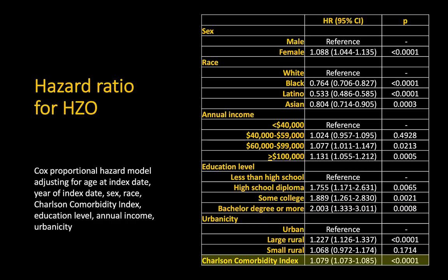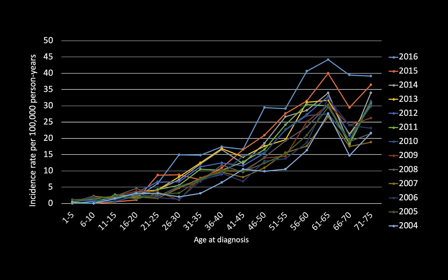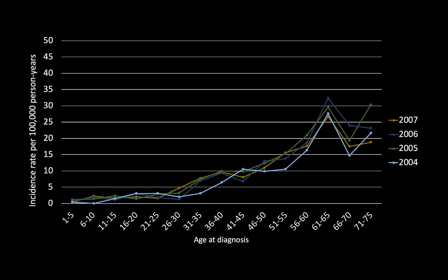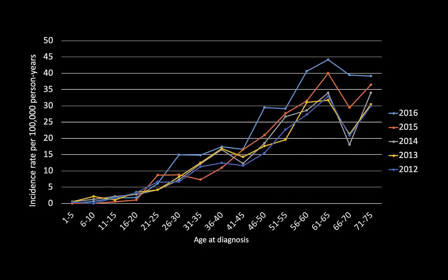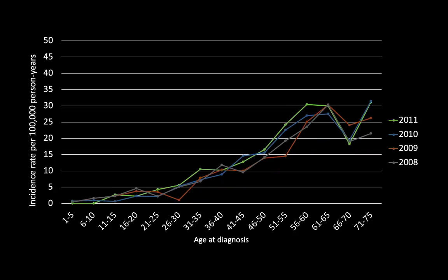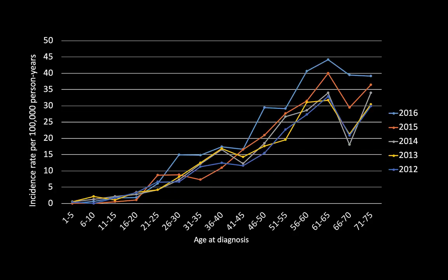Similarly, in a complicated statistical model showing risk factors for herpes zoster ophthalmicus, I first talk about females having an 8.8 percent higher hazard ratio, then that Blacks, Latinos, and Asians have substantially lower risk compared to whites, then that higher income, higher education level, rural location, and higher systemic comorbidity are all associated with higher risk. Visually, your eyes flow downward in the manner I want and with the timing I want. For a busy graph where the x-axis is age and y-axis is incidence of herpes zoster ophthalmicus — each line representing a separate year — sequentially showing the specific years drives home that incidence is increasing over time, which is very intuitively clear.